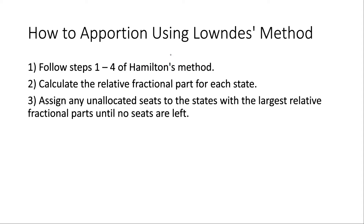Now that we know what relative fractional parts are, we can talk about how to apportion using Lowndes' method. First, you would follow steps one to four of Hamilton's method. Next, you would calculate the relative fractional part for each state using their state quota. Then in step three, you would assign any unallocated seats to the states with the largest relative fractional parts until no seats are left.